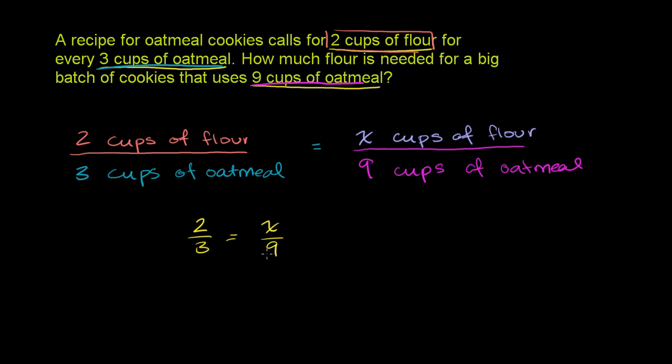And the reason why we're multiplying by 9 is so it cancels out with this 9 in the denominator. You can view it as multiplying both sides of the equation by 9 over 1. So if you multiply both sides by 9 over 1, the left-hand side, you'll have a 9 in the numerator, 3 in the denominator. You can divide them both by 3. So 9 divided by 3 is 3. 3 divided by 3 is 1. So your left side of the equation is 3 times 2 over 1.